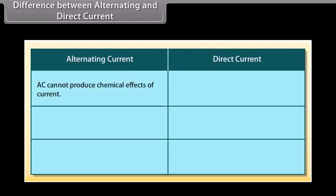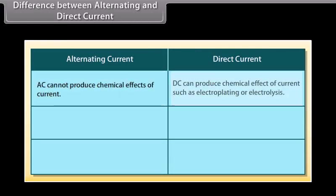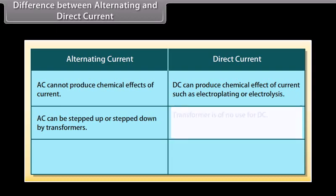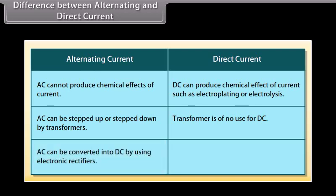The difference between alternating and direct current: AC cannot produce chemical effects of current, but DC can produce chemical effects such as electroplating or electrolysis. AC can be stepped up or stepped down by transformers, but a transformer is of no use for DC. AC can be converted into DC by using electronic rectifiers, whereas DC can be converted into AC by inverters.